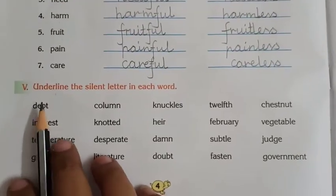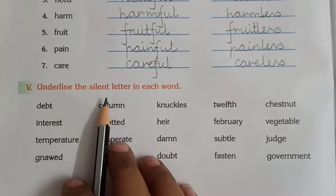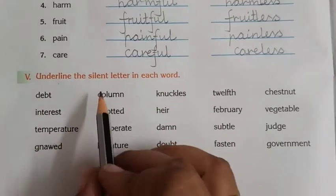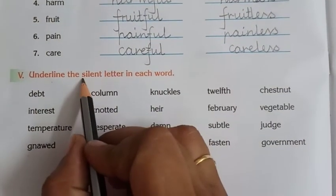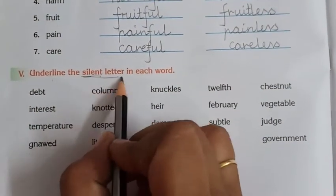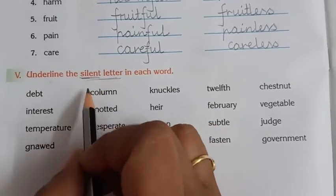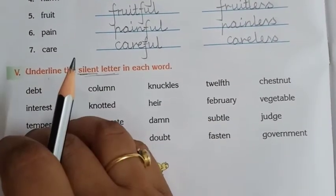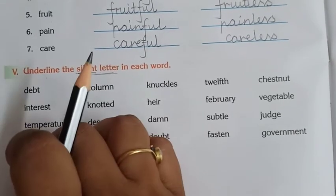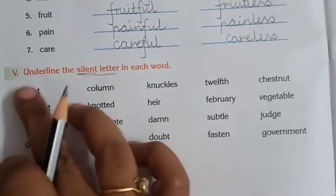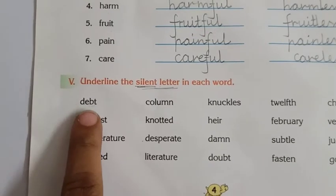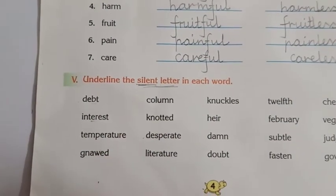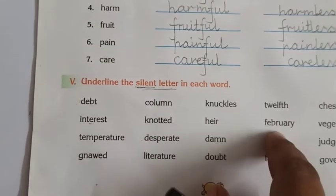Moving on to the next question: underline the silent letter in each word. Before doing this — what are silent letters? A silent letter is one that is not pronounced but is written in the word. In each of these words there is a silent letter.